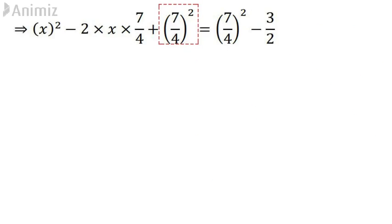Students, after adding (7/4)² on both sides, on the left-hand side you will have the equation as x² - 2 × x × 7/4 + (7/4)². This is of the form a² - 2ab + b². So I can rewrite this as (a - b)².